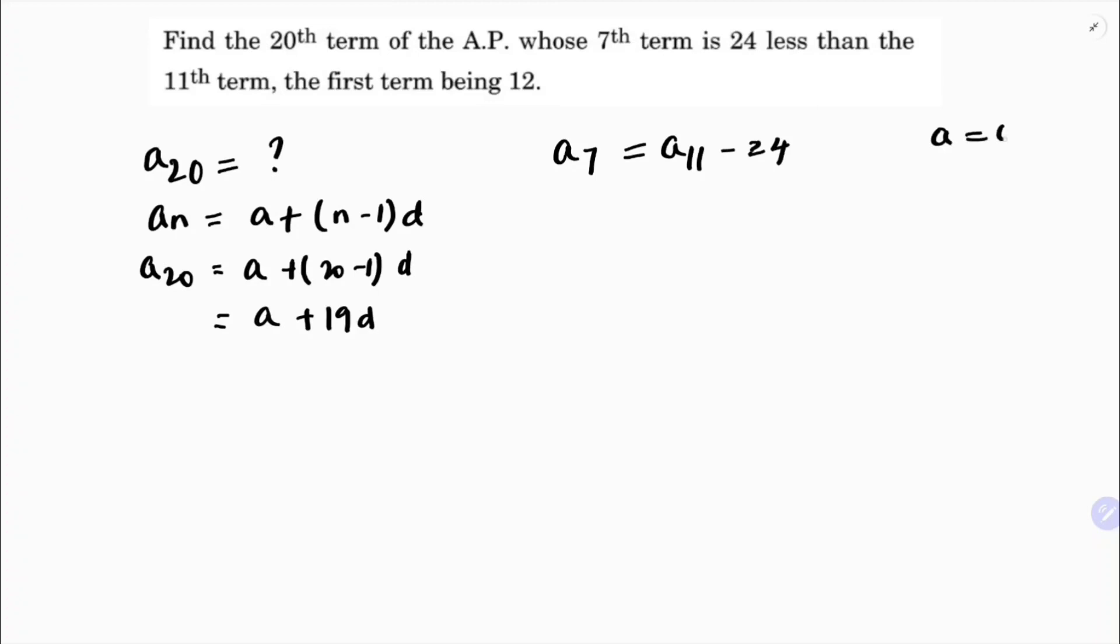So a7 is a + (7 - 1)d, that is a + 6d. Using the nth term formula, a11 will be a + 10d. Since a7 is 24 less than a11, we have a + 6d = a + 10d - 24.